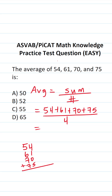4 and 1 is 5, plus 5 is 10, so bring down a 0, carry a 1. 7 and 7 is 14, plus 1 is 15, plus 5 is 20, plus 6 is 26. So this becomes 260 divided by 4.